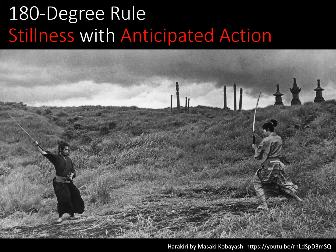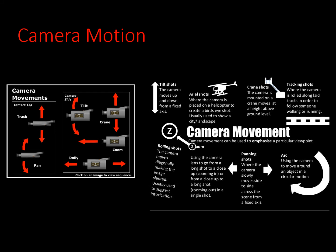You were to watch Harakiri — this fight scene — in order to understand the 180-degree rule. You'll notice if you watch the film that there is stillness, anticipated action, and also these interspersed with the actual fight. You'll also notice in that scene that the camera moves, and that camera motion accents the motion and the stillness of the characters in the fight scene.